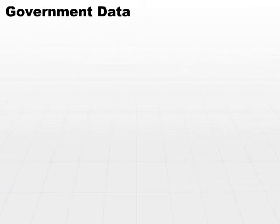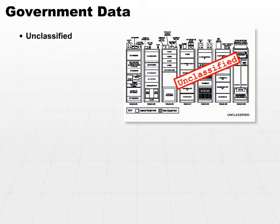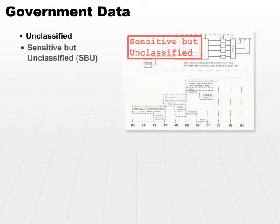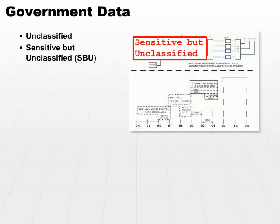Government data classification is very similar in most respects, except different words are used. Unclassified is information which anybody can get to — it's information largely available on websites or to the media.